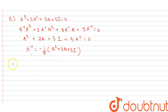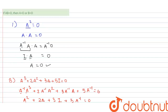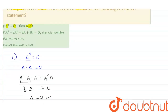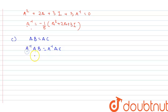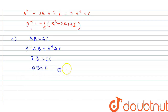Statement C: if AB equals AC, then B equals C. If AB equals AC, we multiply A inverse on both sides: A inverse into AB equals A inverse into AC. Since A inverse into A is I, we get I into B equals I into C, so B equals C. This is correct, but only when A inverse exists.